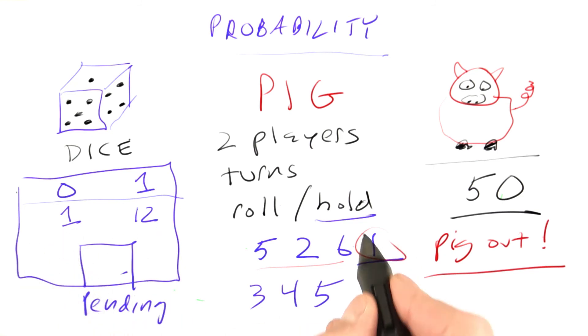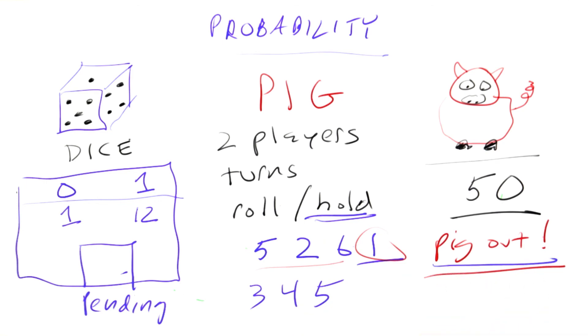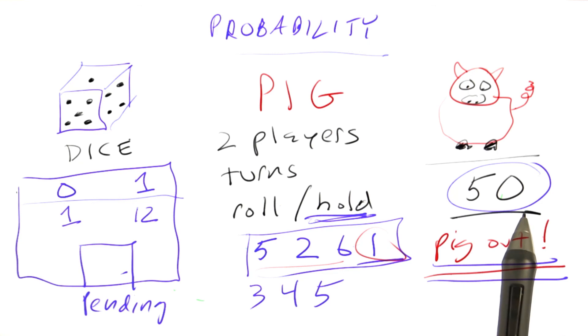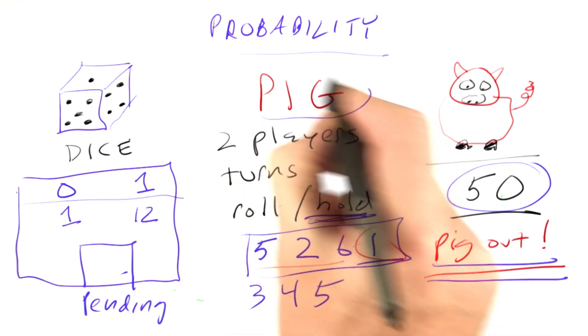So your turn continues until you either hold or pig out, and your score for the turn is the sum of your rolls if you didn't pig out, if you decided to hold, and the score is just 1 if you pigged out. And you keep on taking turns until somebody reaches the target here, 50. So that's how the game of pig works.